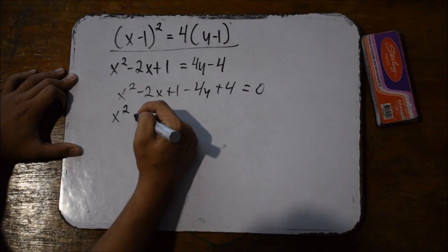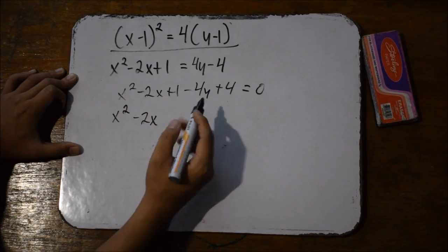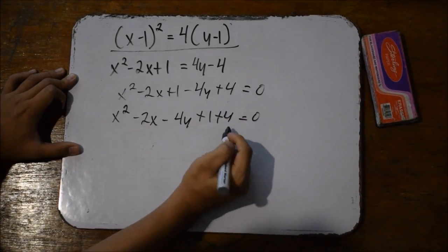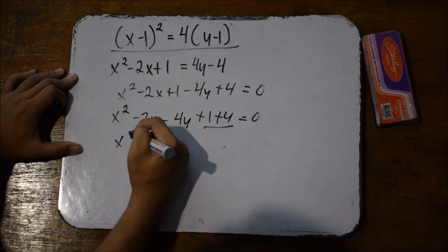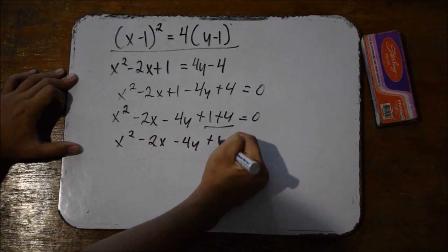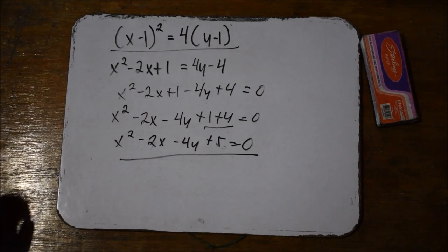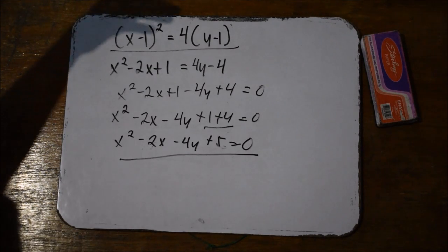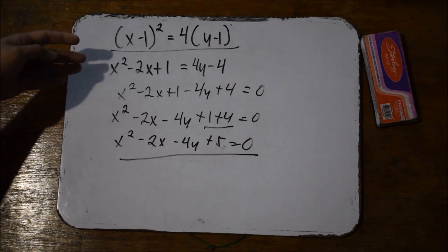The next term is 2x because it's only on the first degree. So x squared minus 2x minus 4y plus 5 is equal to 0. That is the general equation of the parabola with the standard equation of the quantity of x minus 1 squared is equal to 4 times the quantity of y minus 1.